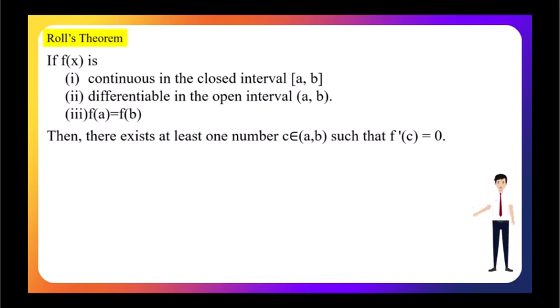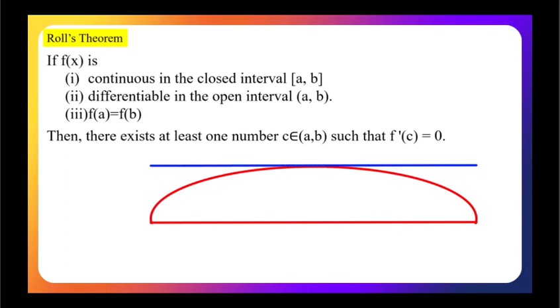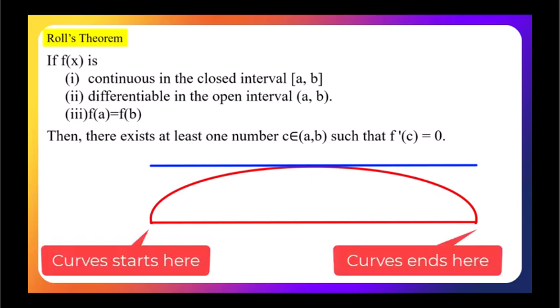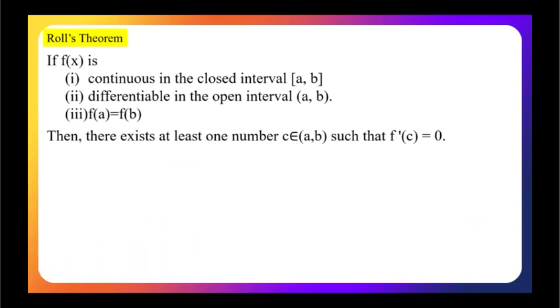In simpler terms, if a function starts and ends at the same point and is smooth in between, then there must be at least one point where the slope of the tangent line is zero. Geometrically, Rolle's theorem tells us that if a curve starts and ends at the same height without any breaks, there exists a point where the derivative is zero — that is, the tangent is parallel to the x-axis.